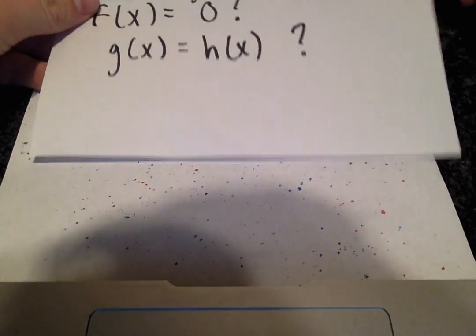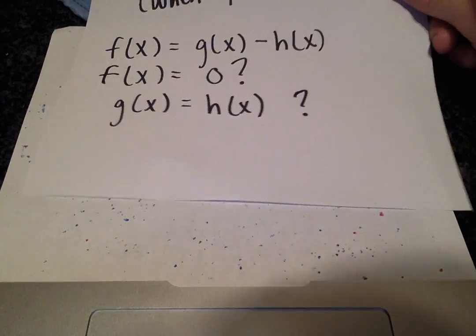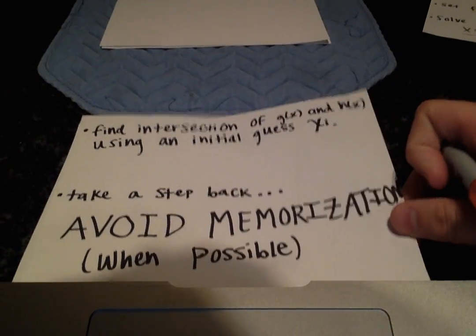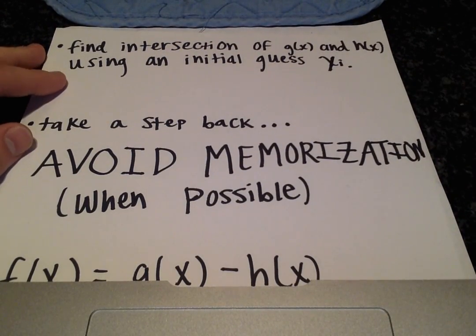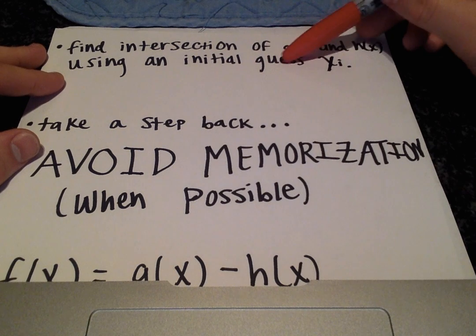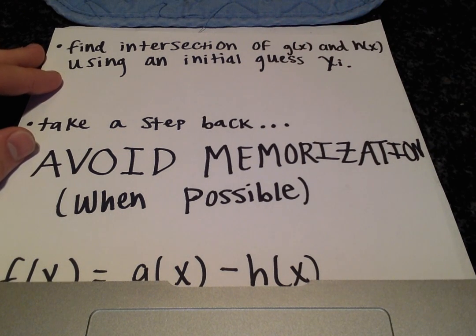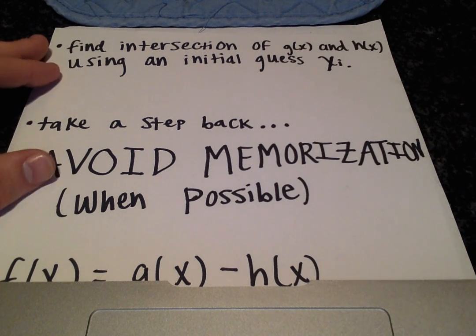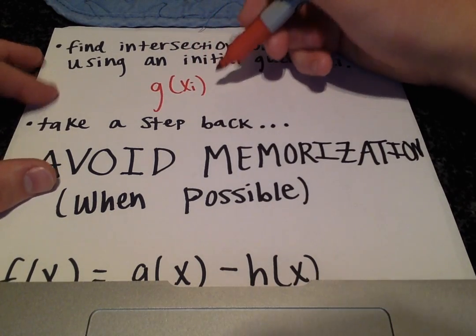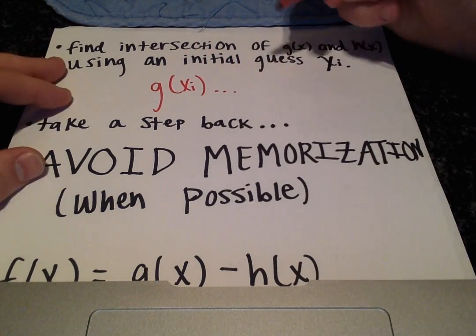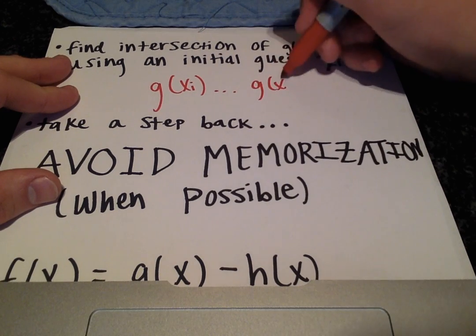The next step is to find the intersection of g(x) and h(x) using initial guess x_i. So we'll start with g(x_i) and use this to find where g(x) equals h(x). That is our ultimate goal.